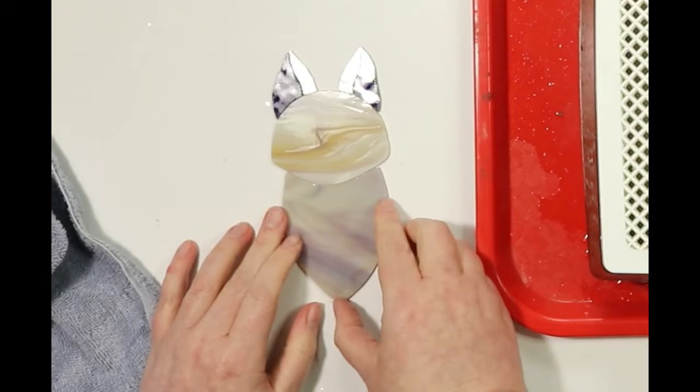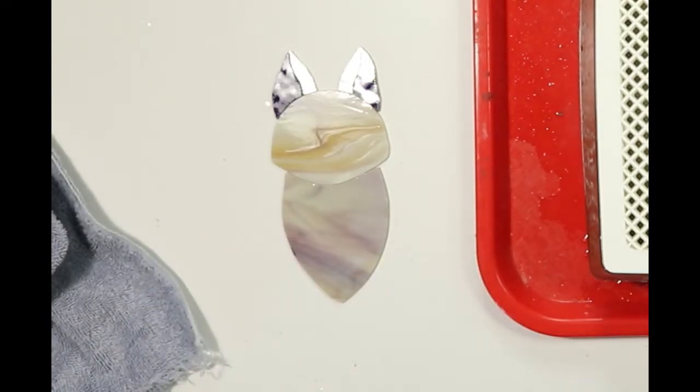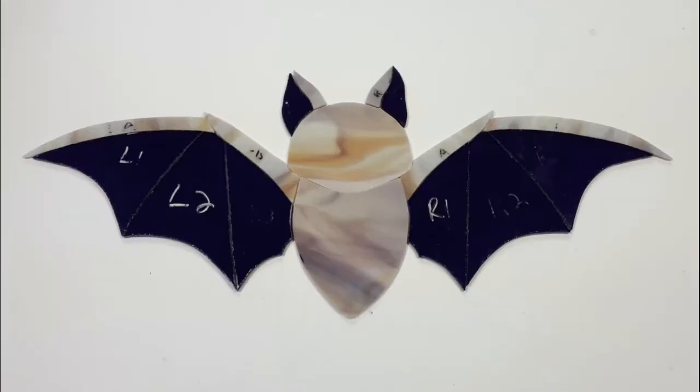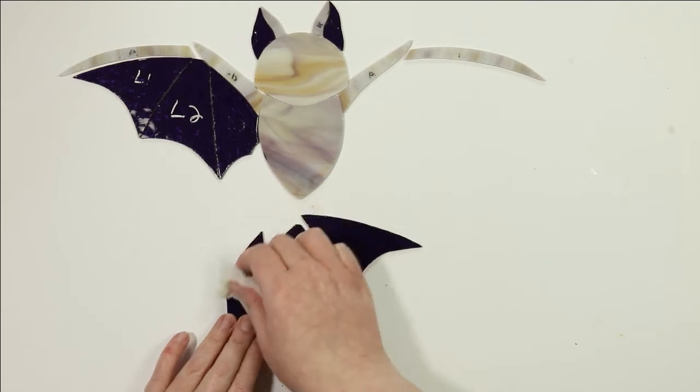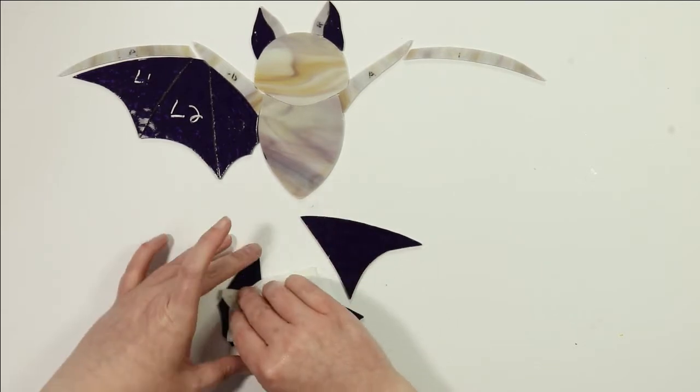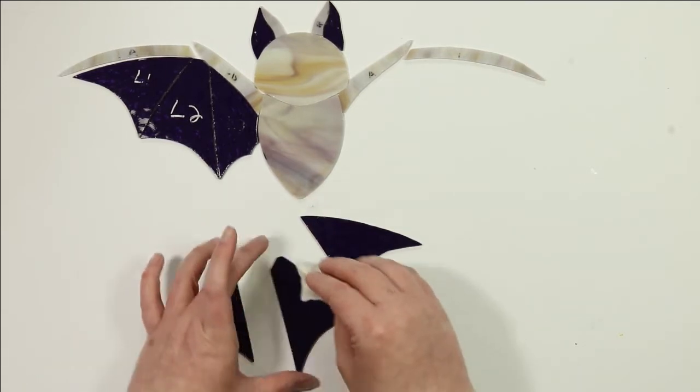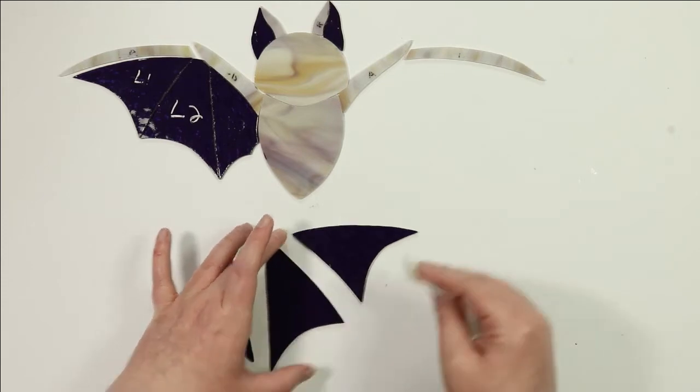So here's a look at our bat with all the glass pieces fitting. Now we're moving on to the exciting part of adding a little bit of detail with glass paint. We always want to start with very clean glass, so I'm just using a little bit of window cleaner and wiping down these pieces.